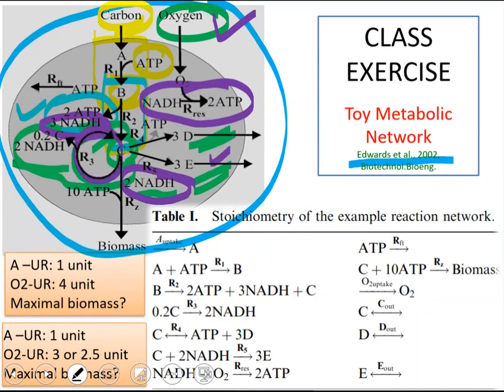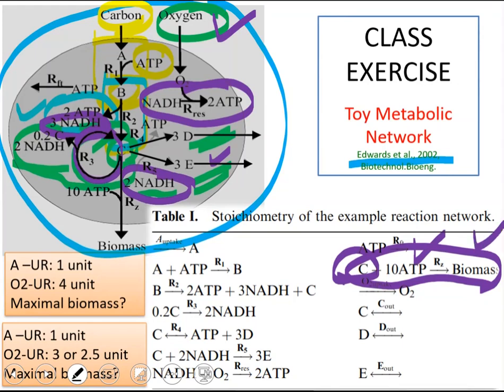And there is also a reaction which defines the formation of biomass from the precursors. So in this very simple metabolic network, C pyruvate is the only metabolic precursor. And in the anabolic reactions, lots of ATP is required. This is growth associated ATP. So this is how biomass reaction is represented.